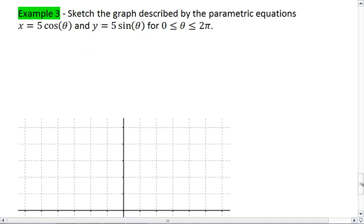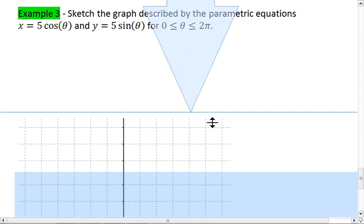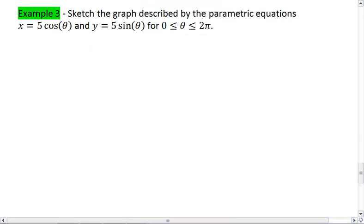So let's look at example 3. We're going to sketch the graph described by the parametric equations of x equals 5 cosine theta, and y equals 5 sine theta. We're going to restrict this to 0 is less than or equal to theta, which is less than or equal to 2 pi.